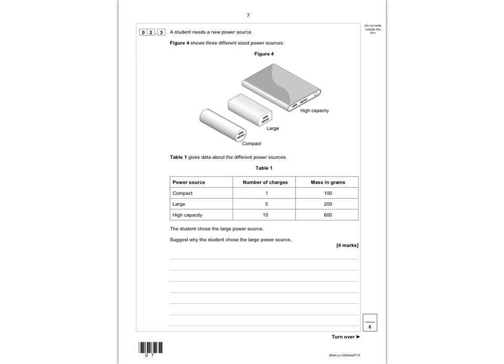Question 2.3: the student needs a new power source. Figure 4 shows three different sized power sources — the compact, the large, and the high capacity. Table 1 gives data: the compact has one charge and a mass of 100 grams; the large has five charges and a mass of 200 grams; the high capacity gives 10 charges and has a mass of 600 grams. The student chose the large power source, and you need to explain why — worth four marks. Compare the large to the compact for two marks, then compare the large to the high capacity for two more marks.